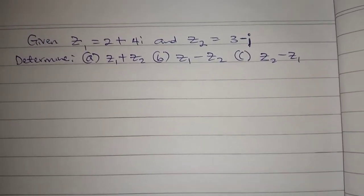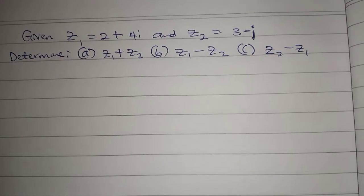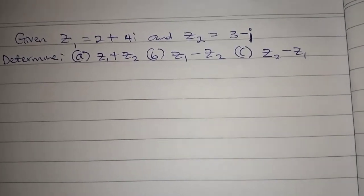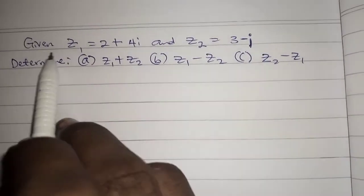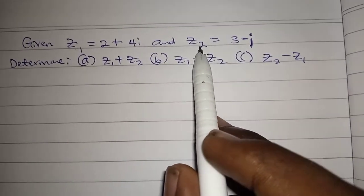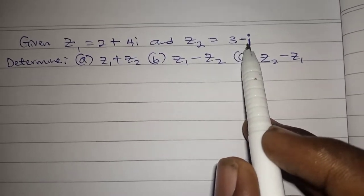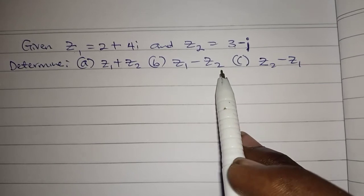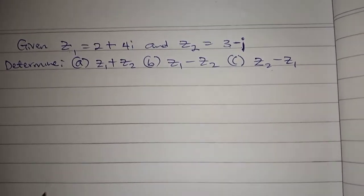Hello, welcome to Your Academy where learning becomes much easier. In this video we'll be learning how to add and subtract complex numbers. In your exam you can be given a question like: Given z1 equals 2 plus 4i and z2 equals 3 minus i, find z1 plus z2 or z1 minus z2 or z2 minus z1.